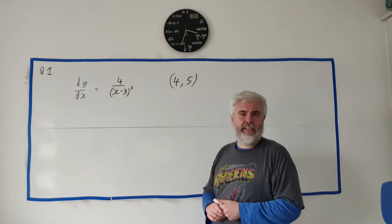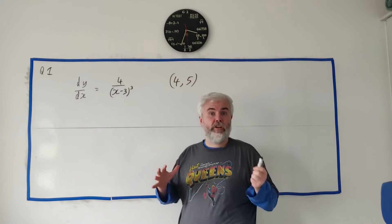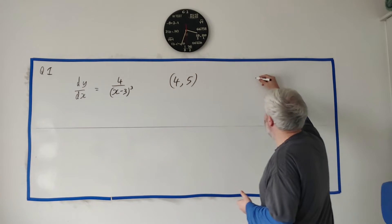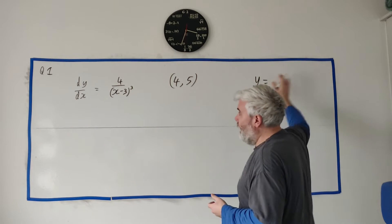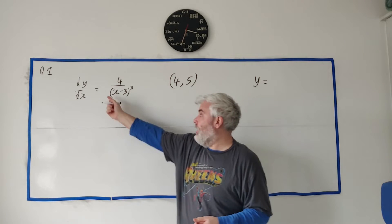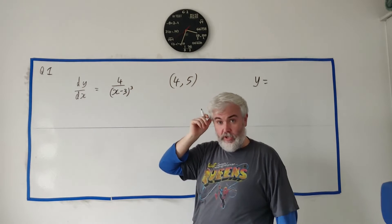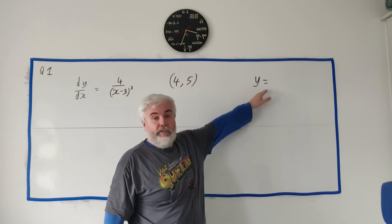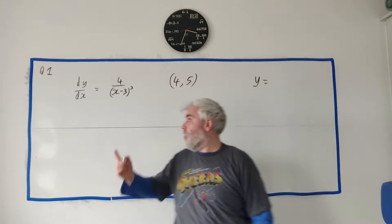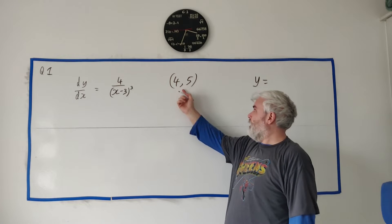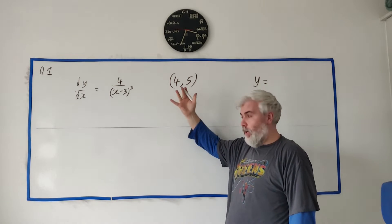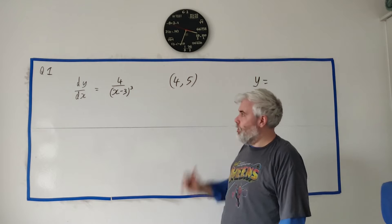This question sets it up by saying there is an equation of a curve, so there's some y equals curve. And if we differentiate that we get dy/dx is equal to 4 divided by (x-3) to the power 3. And they want us to find the curve, y equals this. They tell us, and it'll be useful later, that the curve does have (4, 5) on it. The point (4, 5) is on the curve.